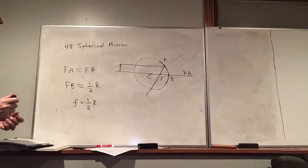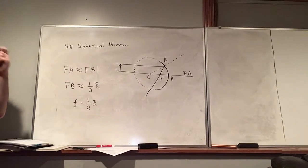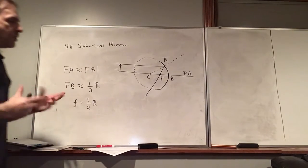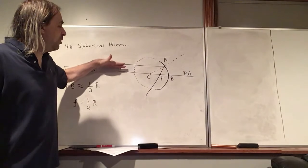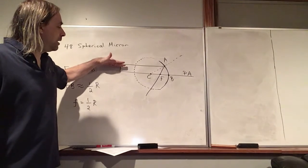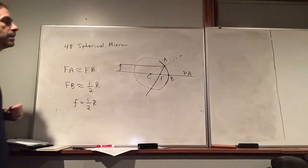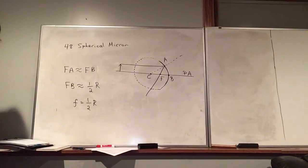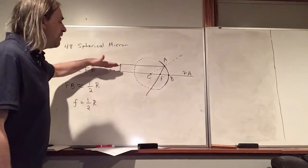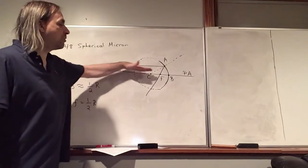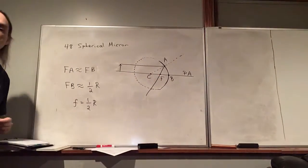What we're going to say is that any ray that comes in parallel to the principal axis is going to pass through this point F. We call that the focal point. And we call this distance between the mirror and the focal point the focal length. So the focal length is one half the radius of curvature of the mirror.